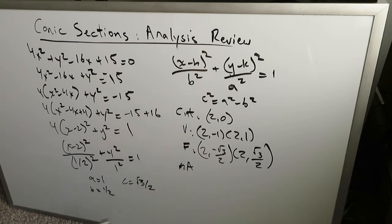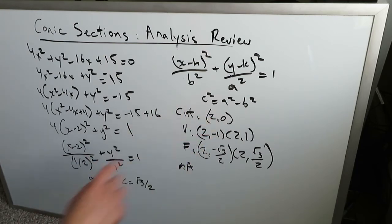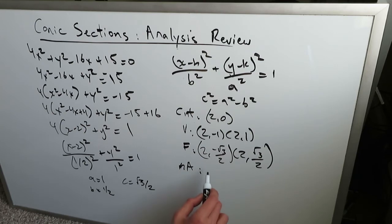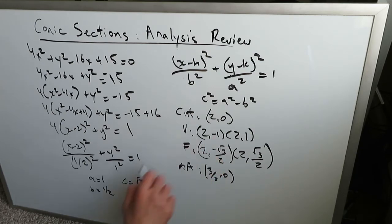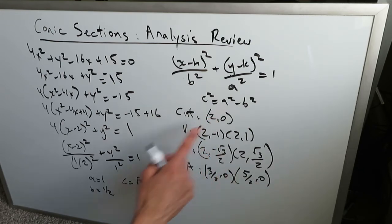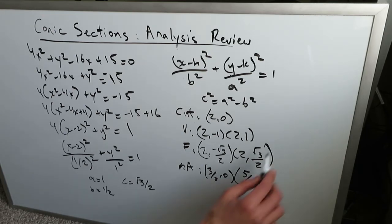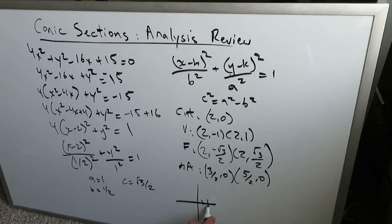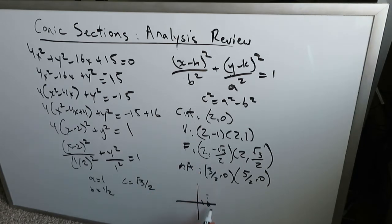The minor axis is always perpendicular to the major axis. Here the major axis is vertical, so the minor axis is horizontal. Moving half a unit right and left from the center, the minor axis endpoints are (3/2, 0) and (5/2, 0). So you have an ellipse with center at (2, 0), vertices at (2, 1) and (2, −1), focal points inside, and minor axis endpoints to the right and left. It looks like a vertically elongated ellipse.